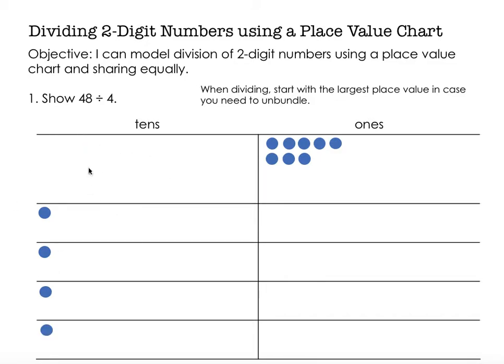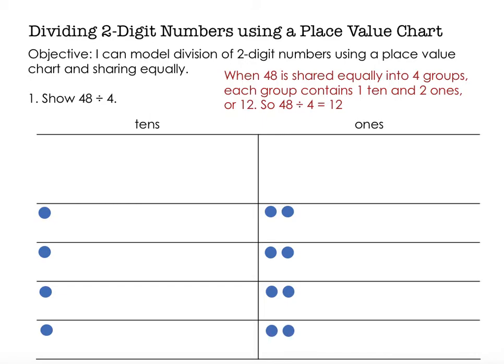Now that I've emptied my tens place, I'm going to my ones place and do the same thing. I'm going to share one in each group until I've shared everything. I still have four more, so I'm going to start over and share them with each group. You'll notice that in each of my groups I have one ten and two ones, and every single one of those groups is exactly the same size, so I have shared equally. So when 48 is shared equally into four groups, each group contains one ten and two ones, which is 12. So 48 divided by 4 is 12.